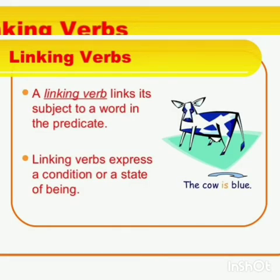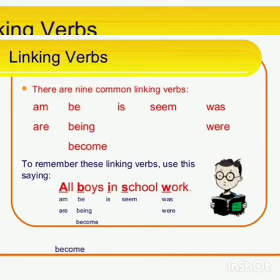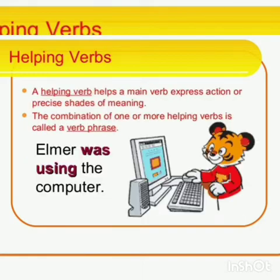Linking verbs express a condition or state of being. For example, 'The cow is blue' — 'is' expresses the state of being. There are nine common linking verbs: am, are, be, being, become, is, seem, was, were. For example, 'She became a doctor' — this expresses the state of being.